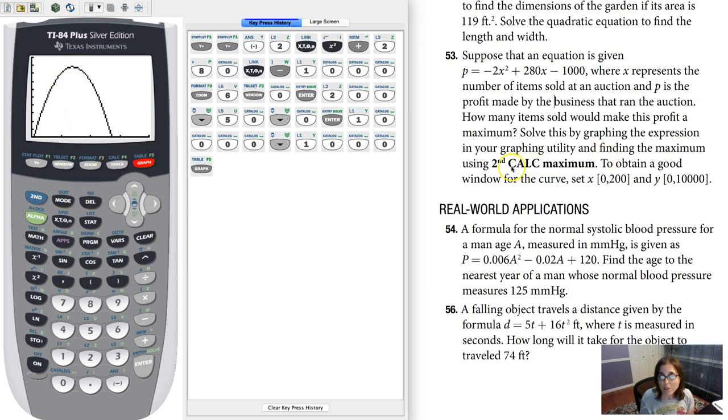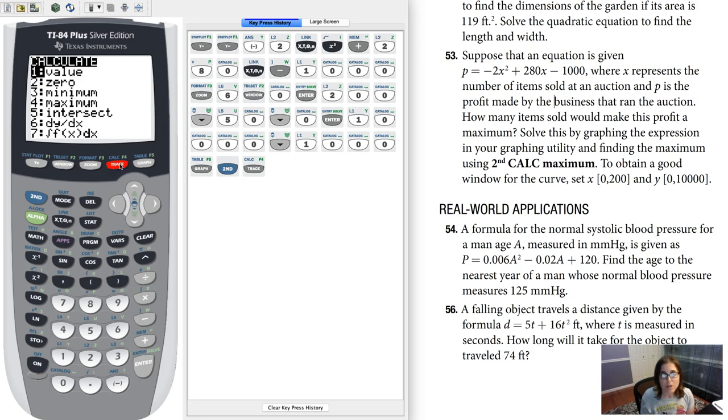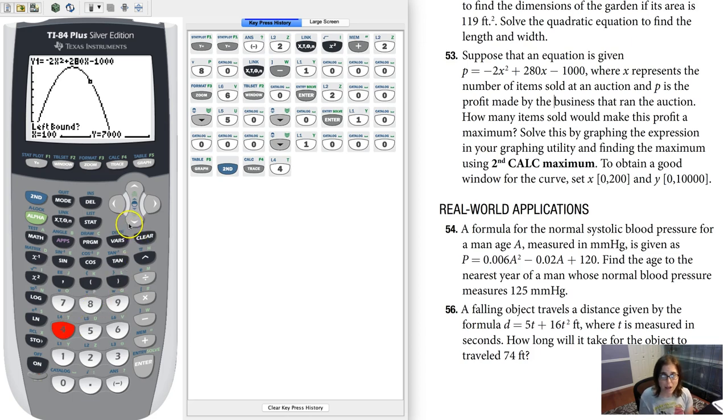Now we've got here, use second calc max. So let's hit second. And when you hit your calc menu, that's hitting this trace button here. You see calc is written in blue. So second and calc are second and trace, and I want option four. Now you can either scroll down to four and hit enter, or you can just hit four.